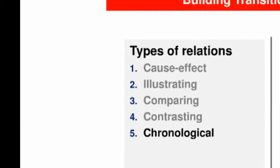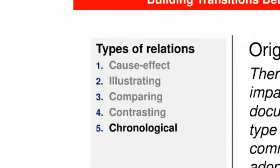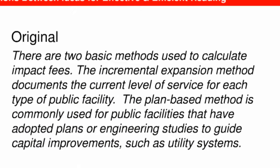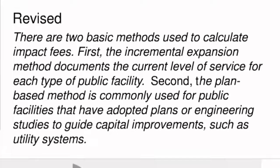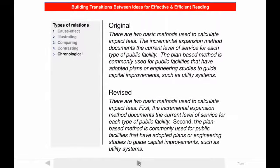The fifth type of relation that can be shown by transitions is chronological. Look at another passage. The meaning of the first sentence is illustrated chronologically with the second and third sentences. This would be made more clear with transitions like "first" and "second," as you see in the revised version.